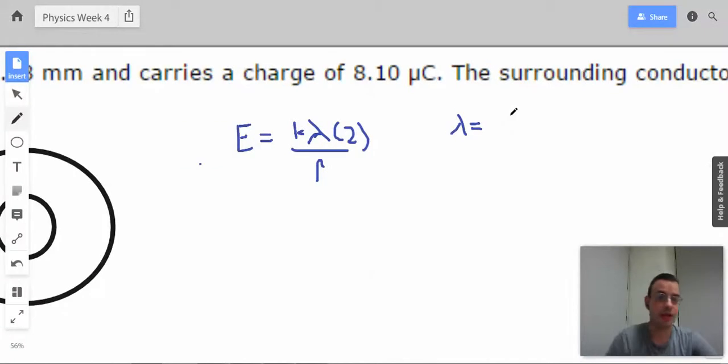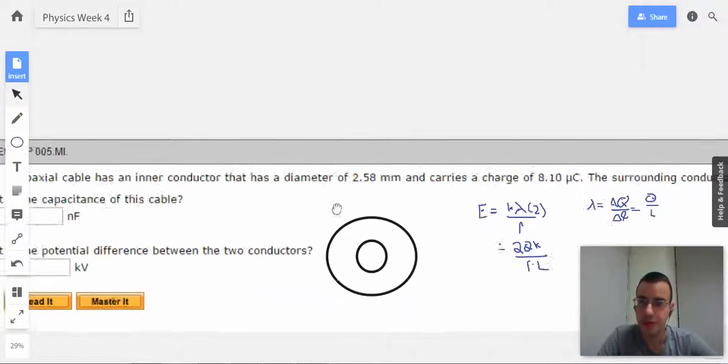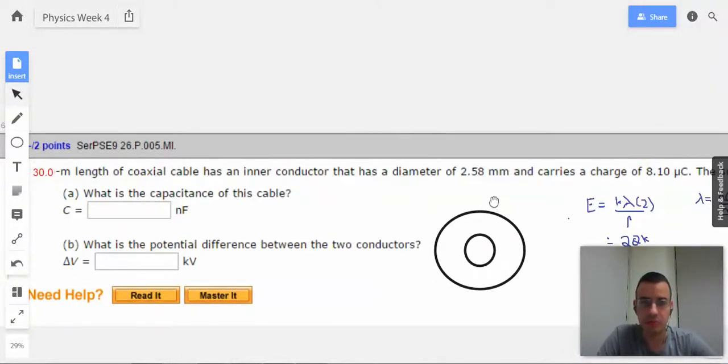So lambda is a small bit of charge over a small bit of distance, but in this case I'm going to say that we're going to do all the charge and all the distance. This is going to be 2QK over R times L, which is whatever the length is of the coaxial cable, which they gave us.